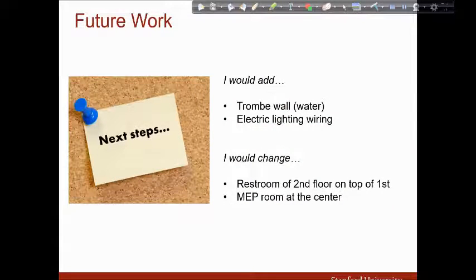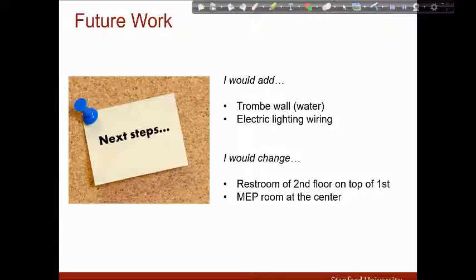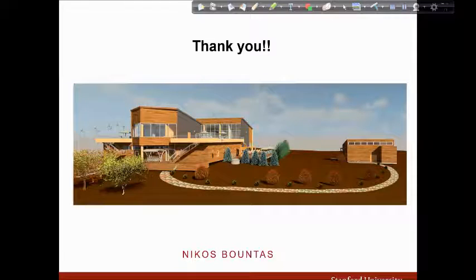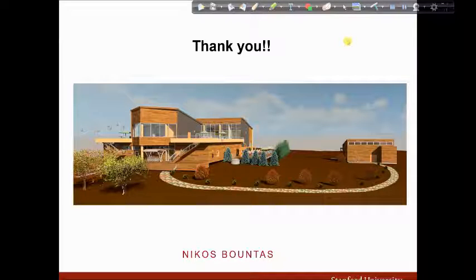If I had more time, I would add the Trombe wall with water and electrical wiring and see how that adds another layer of complexity to the existing system. If I had to design the building from scratch, I would place the restrooms on the second floor on top of the ones on the first floor to make the plumbing systems easier. I would also put the MEP room at the center of the building. Thank you! I will leave you with a rendering showing the path that connects these two buildings and I will also walk you through my exhibition center in Glue.